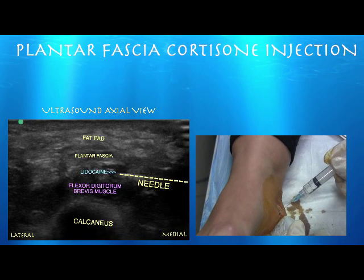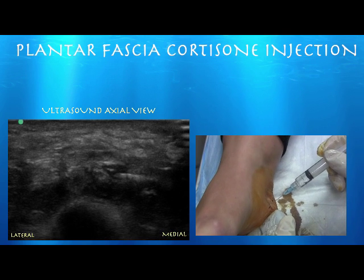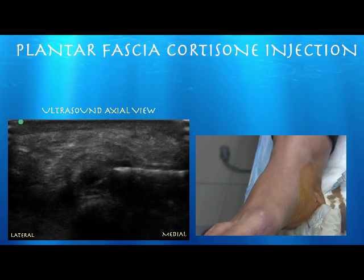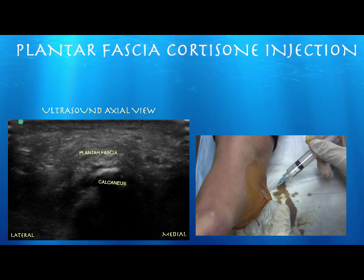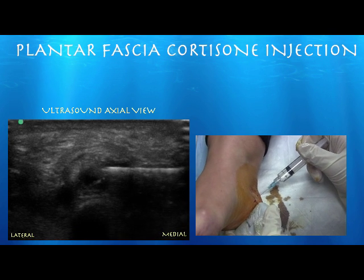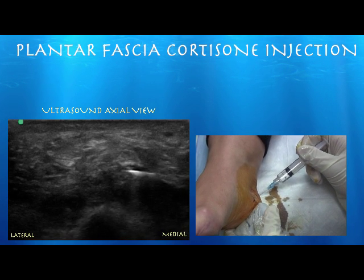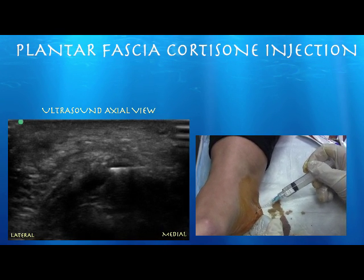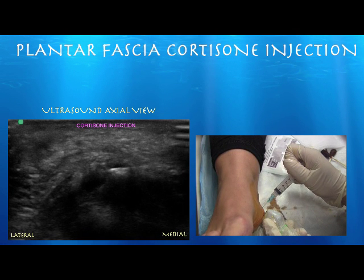Here's our needle going underneath the plantar fascia, between that and the flexor digitorum brevis muscle and calcaneus. The advantage of this technique is that you can see the needle on long axis; however, you can't do any fenestration of the plantar fascia because you're going against the fibers. Here we are injecting cortisone — you can just see a little wash come out of the needle underneath the plantar fascia.